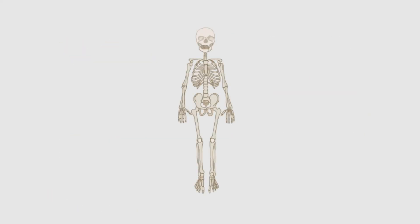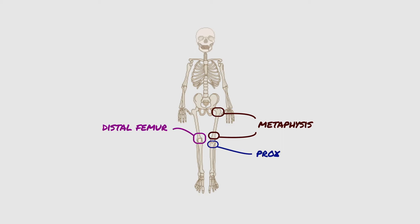Osteosarcoma can arise in any bone in the body, but there is a striking propensity for this tumor to occur in the metaphyseal region of the long bones. The distal femur, proximal tibia, and proximal humerus represent the most common sites of involvement.